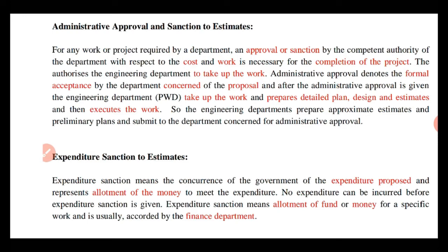Administrative approval is the formal acceptance by the department concerned of the proposal. After the administrative approval is given, the engineering department takes up the work and prepares detail plan, design, and estimate, and then executes the work. The engineering department prepares an approximate estimate and preliminary plans and submits them to the department concerned for administrative approval.